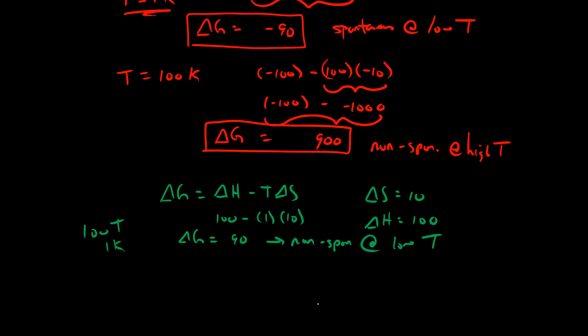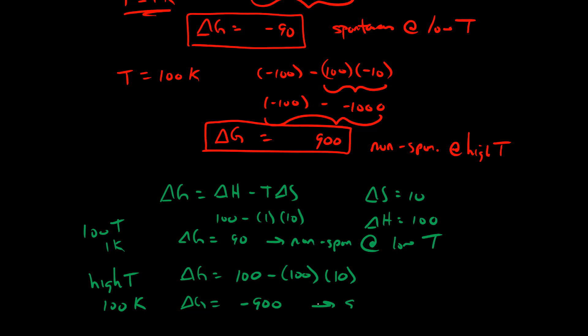Switching to high temperature — 100 Kelvin — we have delta G equals 100 minus 100 times 10, giving us 100 minus 1,000, or negative 900. So this is spontaneous at high temperatures. When enthalpy and entropy are both positive, the reaction is spontaneous only when temperatures are high enough that the favorable entropy overcomes the unfavorable enthalpy. In the next video, we'll wrap this up and explore these calculations a bit more.